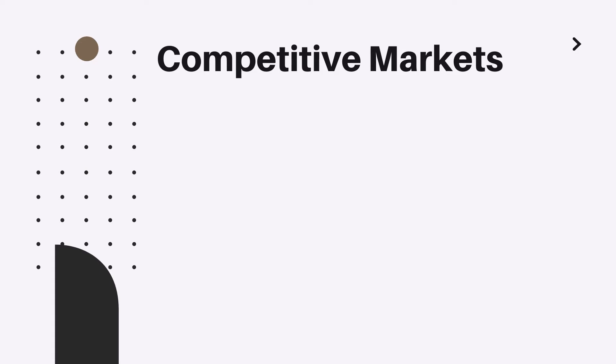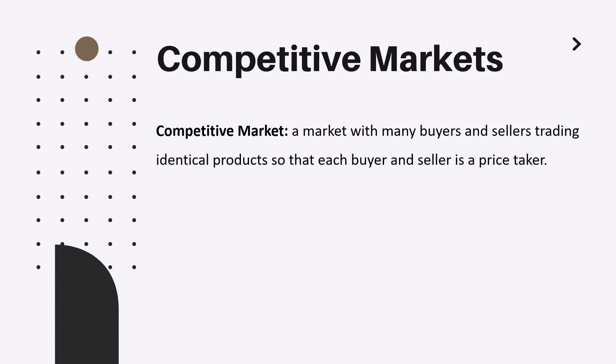Let us start our discussion by defining competitive markets. Competitive markets are markets with many buyers and sellers trading identical products, so that each buyer and seller is a price taker. This is an idealistic, hypothetical situation which will help us better understand real-life scenarios in the future.